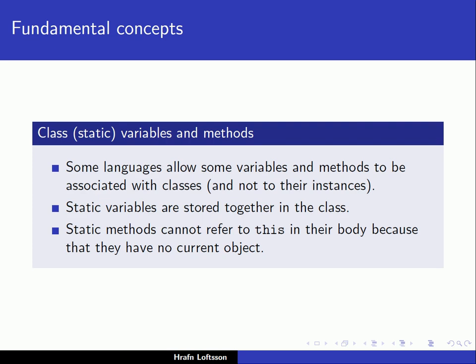Some object-oriented languages also allow variables and methods associated with the classes themselves, not the instances — called class variables or static variables. In C++ you can have static variables associated with classes, meaning they are stored in the class itself, not in the objects. One can also have static methods, but they cannot refer to the 'this' pointer in their body, because they have no current object — they are associated with the class, not the objects themselves.